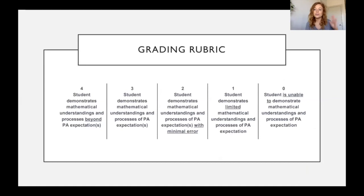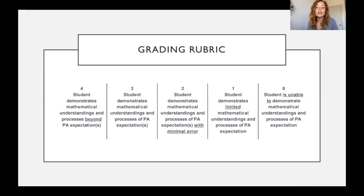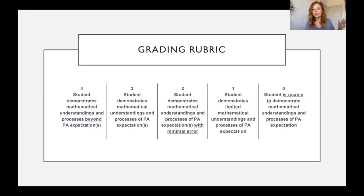All of these will be graded on a grading rubric from zero to four. Each part of each question will land somewhere between zero to four. The rubric can be located at the bottom of your performance assessment, which will be emailed and located in Schoology. A four means a student demonstrates mathematical understandings and processes beyond the performance assessment expectations. A three means the student meets expectations. A two means the student meets expectations with minimal error. A one means limited understanding, and a zero means unable to demonstrate understanding. We want everyone to get a pass, so stay between a two and a four — we know you can get a four.